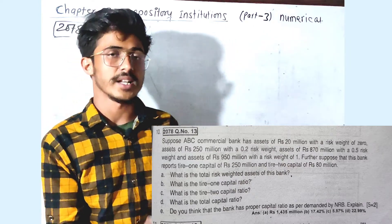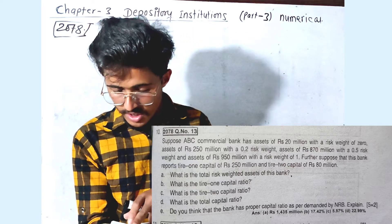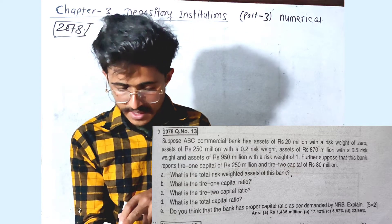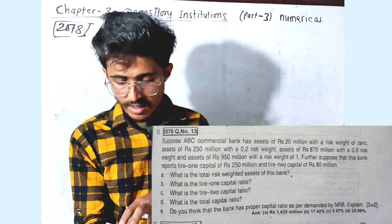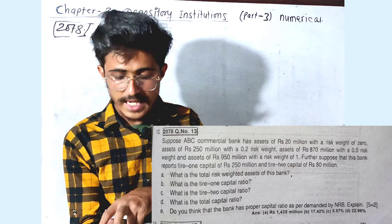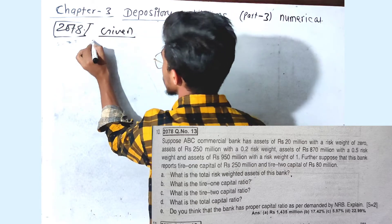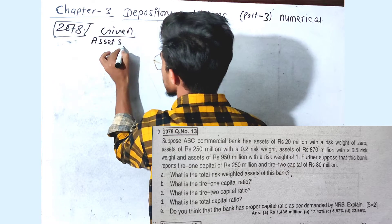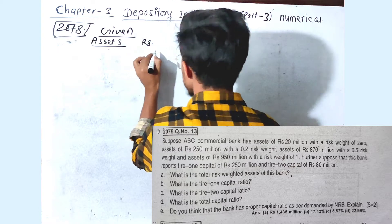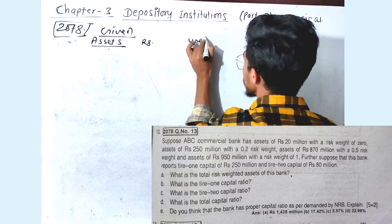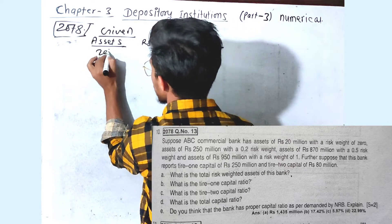If we look at the risk weights — 0%, 20%, 50%, and 100% — this is about a Nepal bank. Further suppose that each bank reports Tier 1 capital of 10 million and Tier 2 capital of 80 million. So we have assets and their rupee values: 20 million.